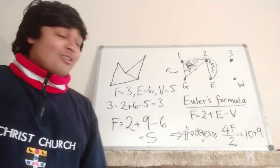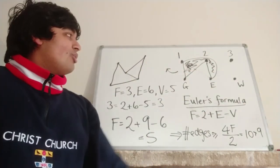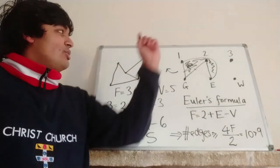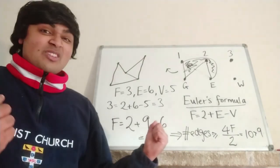So in fact, it's not possible to draw three lines from the set of gas, electricity, and water each to houses one, two, and three. And that solves our problem. The key being Euler's formula.